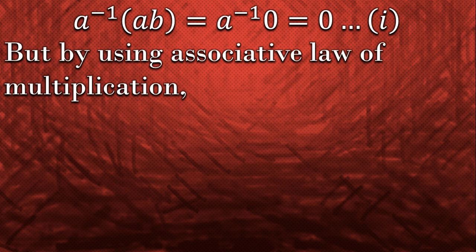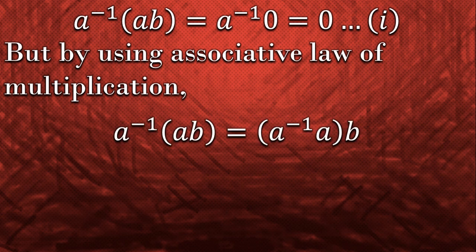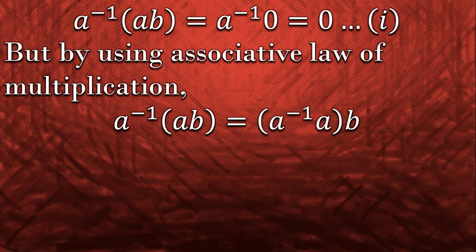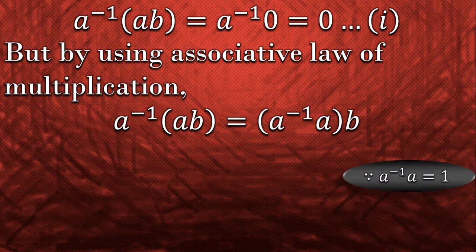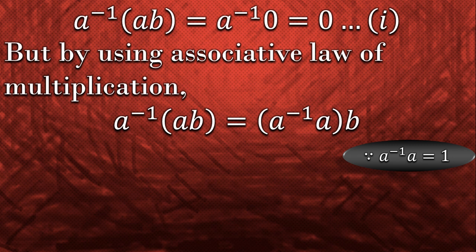Okay, now do the same thing in a different way. If we multiply a inverse with ab and apply associative law of multiplication on it, we get a inverse a multiplied with b. As an element being multiplied with its inverse gives 1, so a inverse a is equal to 1.